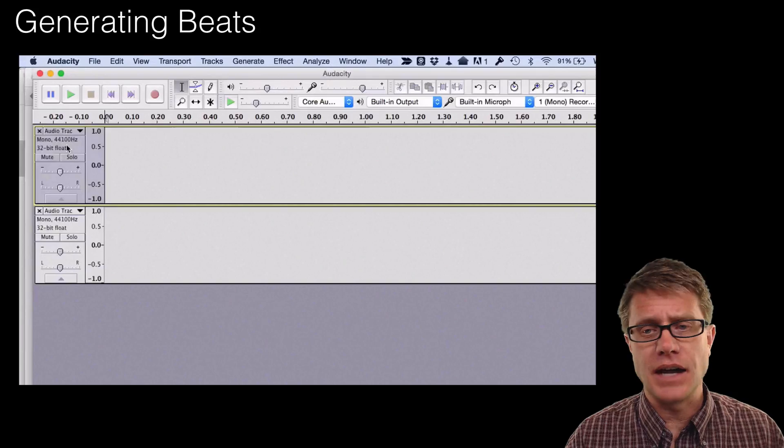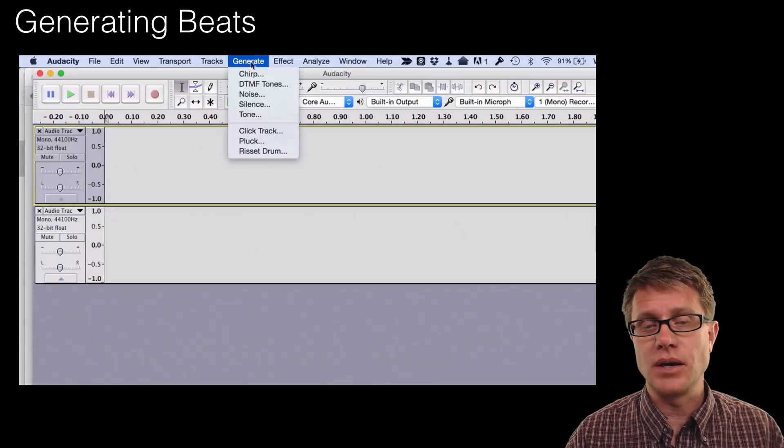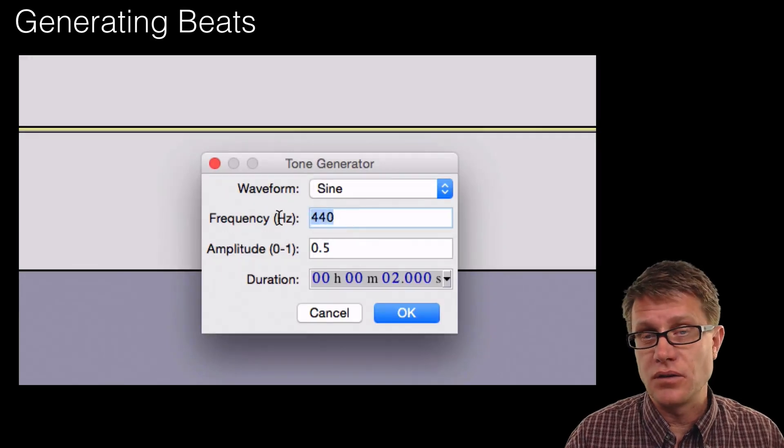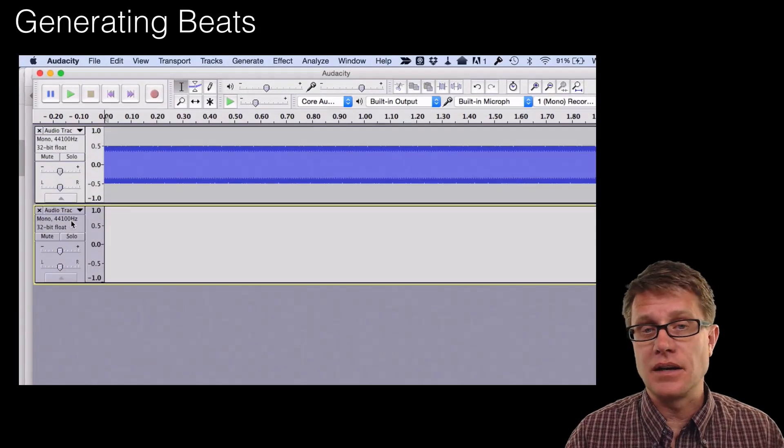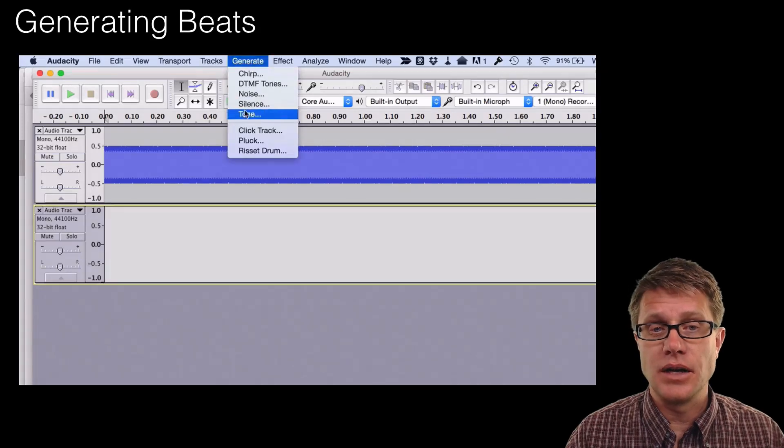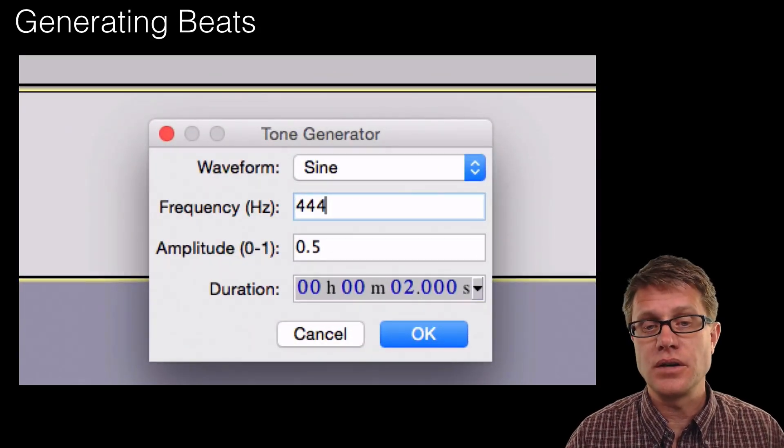So I am using Audacity, it is a little music software. And so what I am going to do is I am going to generate some tones. And so I am going to generate a 440 hertz tone. So that will be in one track. And then I am going to add another track down here and we are going to generate another tone. So we will make this one slightly different.